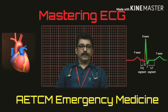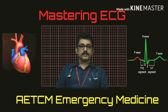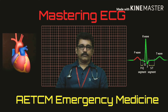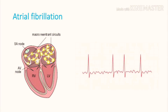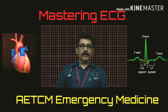In atrial fibrillation, the atria beat around 600 beats per minute, so you won't get a normal P-wave on ECG. Not all 600 beats transmit to the ventricle — only randomly around 160 to 200 may transmit, producing a random QRS complex that is irregularly irregular. If you see irregularly irregular QRS complexes on any ECG, you can make a diagnosis of atrial fibrillation.